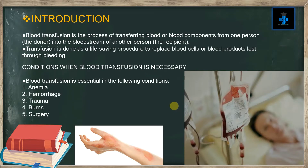Blood transfusion is the process of transferring blood or blood components from one person, the donor, into the bloodstream of another person known as the recipient. Transfusion is done as a life-saving procedure to replace blood cells or blood products lost through bleeding. Conditions when blood transfusion is necessary are: number one, anemia; number two, hemorrhage; number three, trauma; number four, burns; and number five, surgeries.